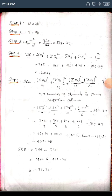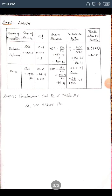Step 6 (SSE): The Sum of Squares of Error is SSE = TSS − SSC, i.e., Step 4 minus Step 5. This gives SSE = 1498.36.